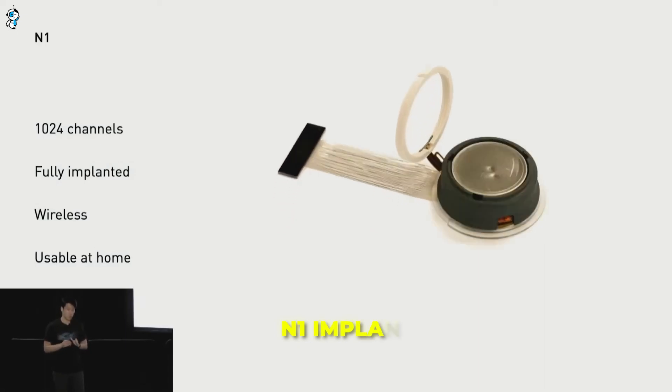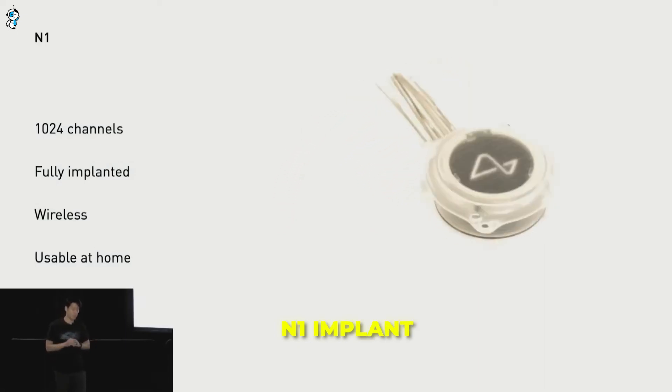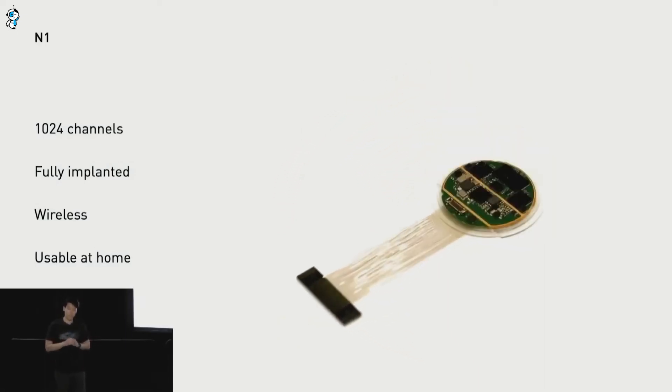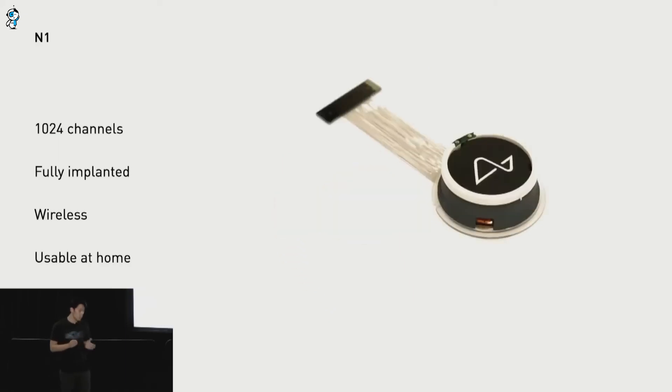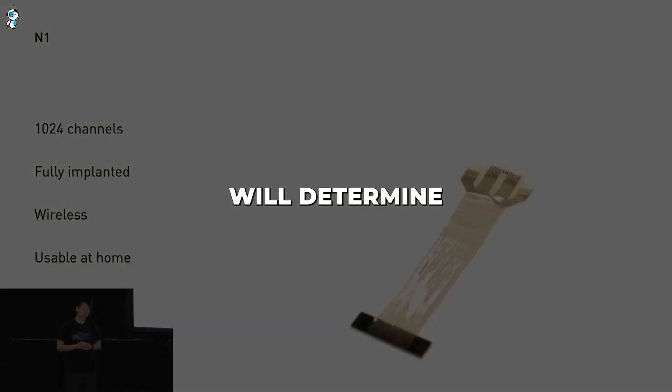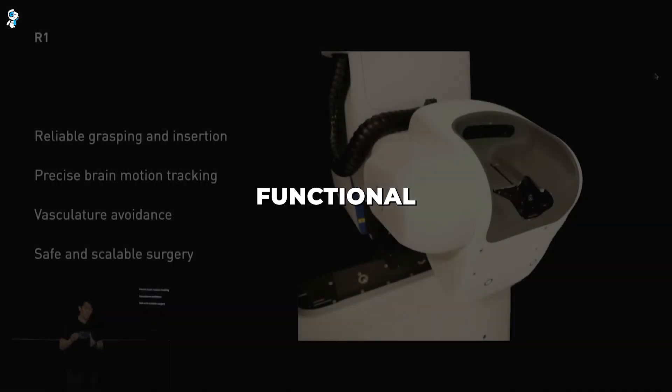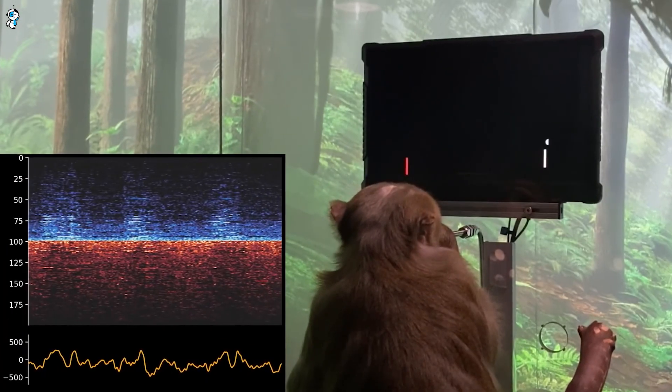Known as the N1 implant, this tiny device features ultra-thin, flexible threads that are designed to be threaded into the outer layers of the brain. The study will determine if the N1 can be safely implanted and remain functional within the brain.